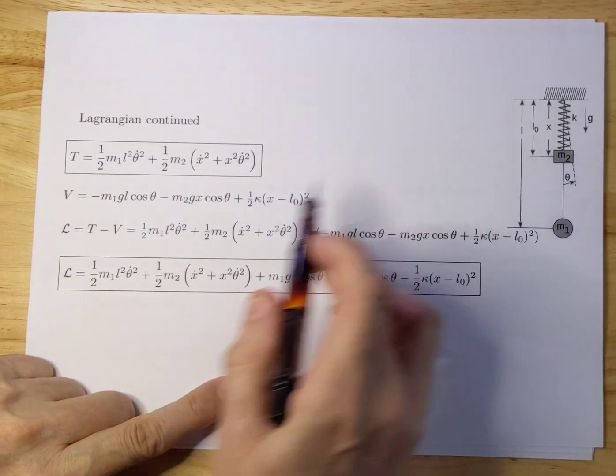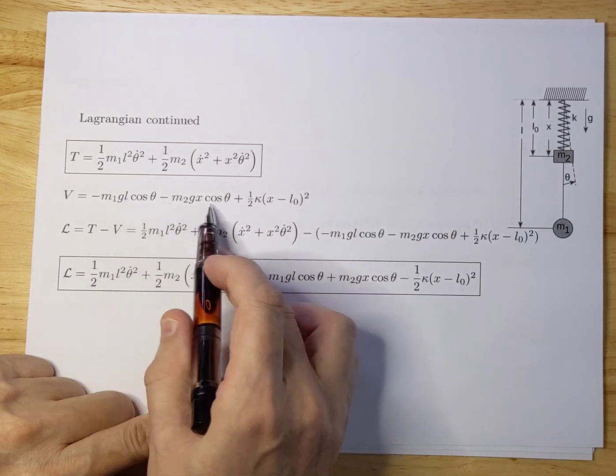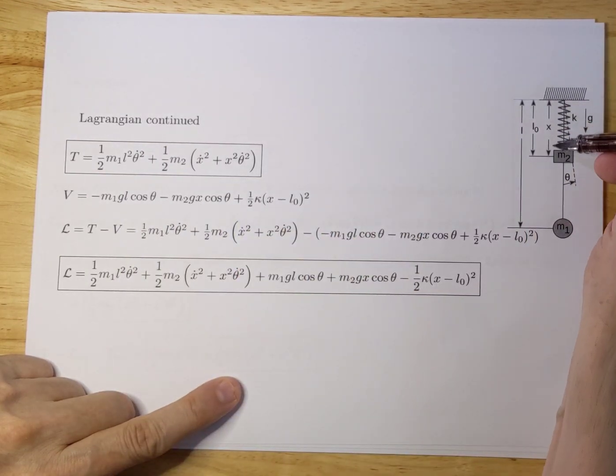Same for M2, exactly the same term. But instead of L you use X because that's the generalized coordinate for the location of M2.